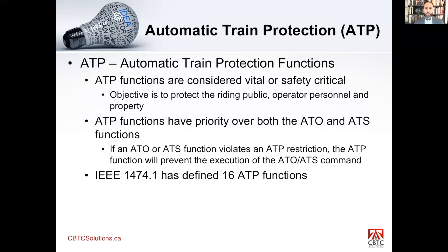ATP is your Automatic Train Protection function. This is considered vital and safety critical. Its objective is to protect the riding public, operating personnel, and property — that is the main objective of ATP. In a CBTC system, it has priority over ATO and ATS, meaning if the ATO system were to break any of the limits defined by the ATP system, ATP will override it and stop the train — either by emergency braking, preventing train doors from opening, or preventing a train from being routed into an open switch.